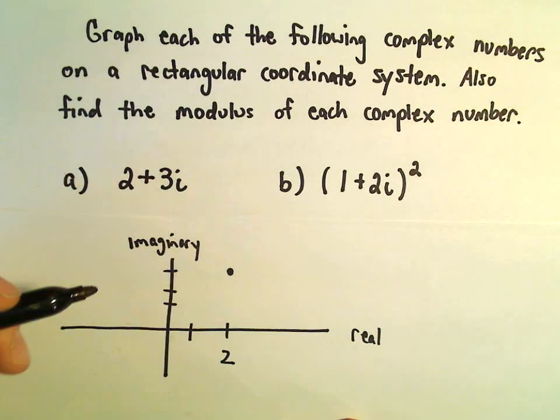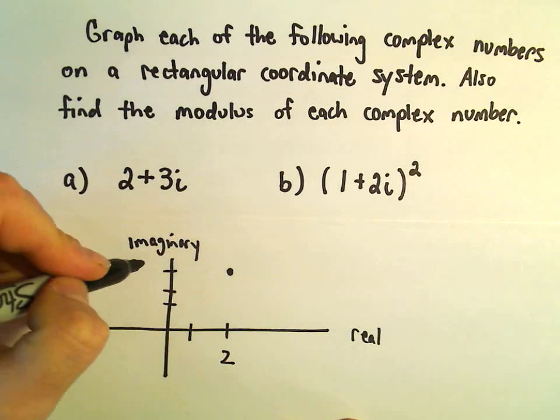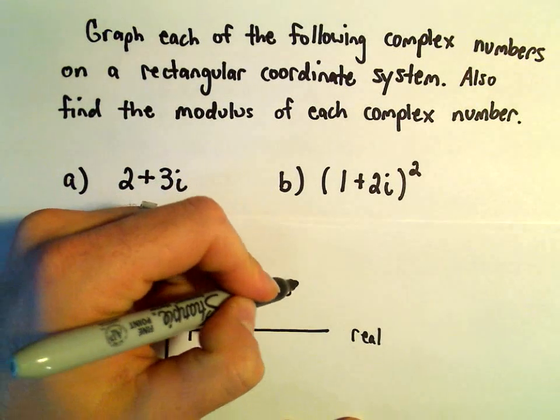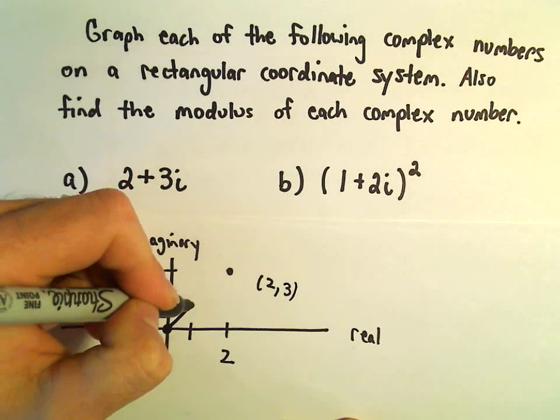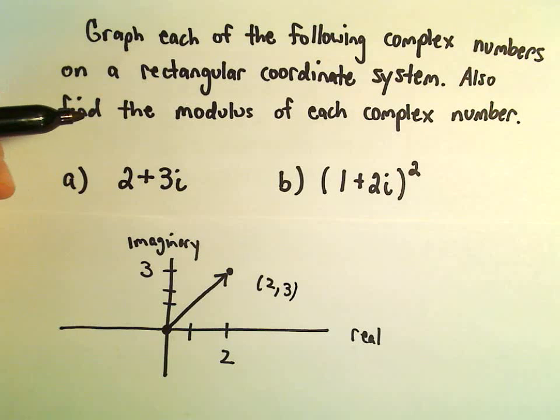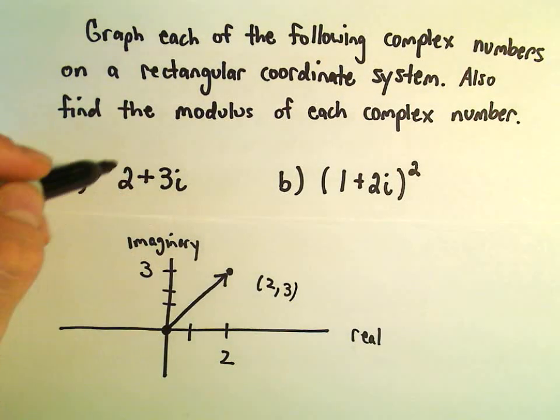Not to scale here, squeeze it in. If we're at basically the coordinate 2, 3, we'll make a little vector going from the origin to that point. And we would say that's now the graph of that complex number.